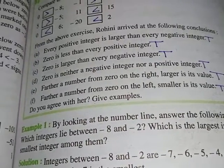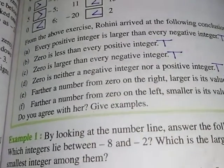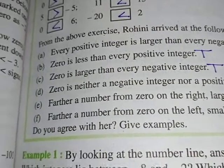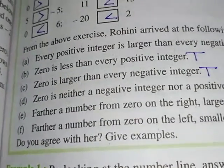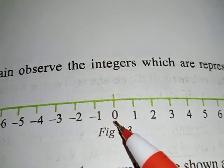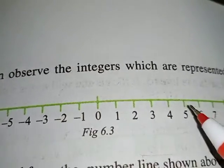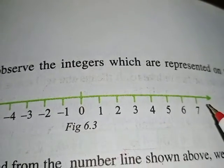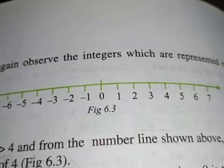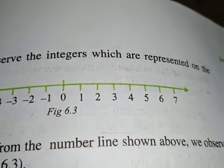Farther a number from zero on the right, larger its value - correct! Exactly the correct thing she noticed. Whenever a number is far away from zero, larger is the value. If you see here, 1 is near zero and 5 is far away from zero, so its value is more.